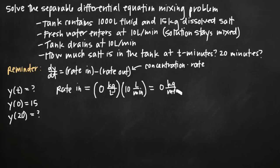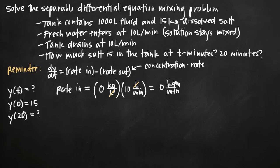With mixing problems it's really helpful to carry your units through whenever you can. In this problem we have kilograms, liters, and minutes. Writing the units into the problem lets us see that liters cancel from numerator and denominator, leaving kilograms per minute, which makes sense as the rate of salt entering the tank.